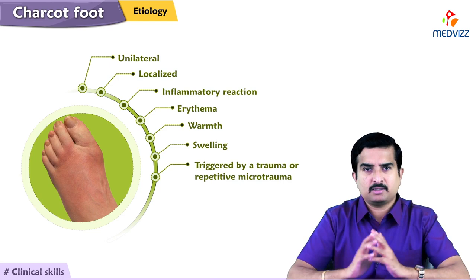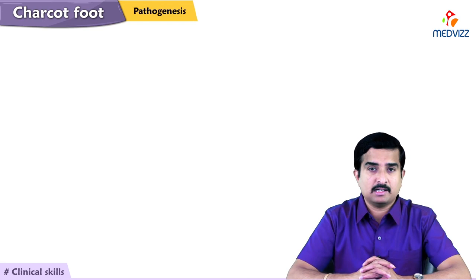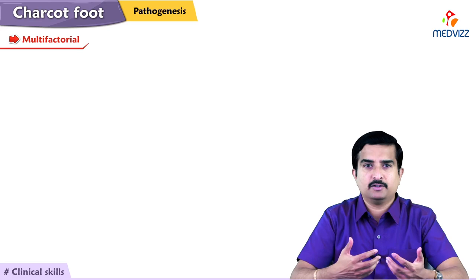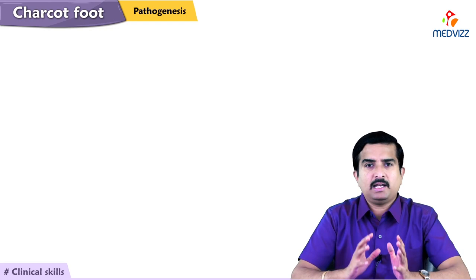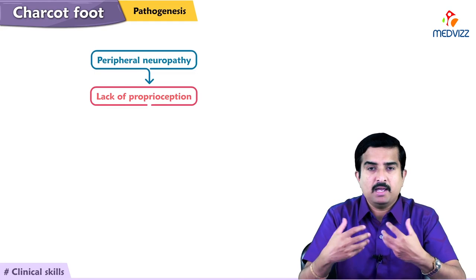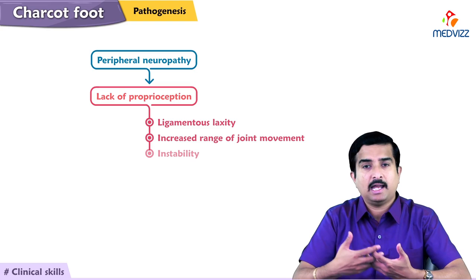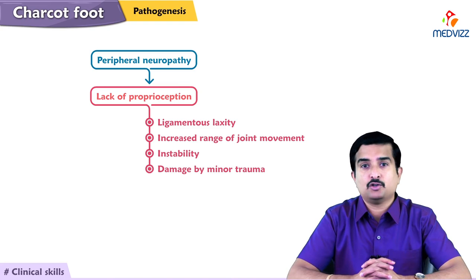The pathogenesis remains uncertain but is likely multifactorial, due to a combination of mechanical and vascular factors resulting from diabetic peripheral and autonomic neuropathy and metabolic abnormalities of the bone. Lack of proprioception secondary to peripheral neuropathy may result in ligamentous laxity, increased range of joint movement, instability, and damage from minor trauma to which the insensitive neuropathic foot is prone.